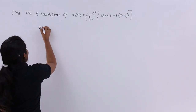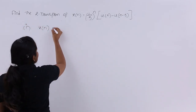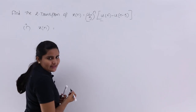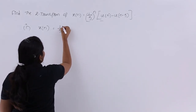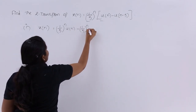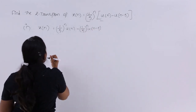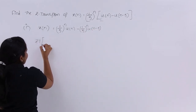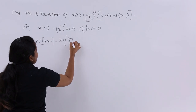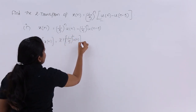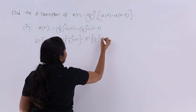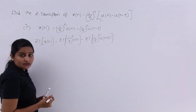In the first method, x(n) is written by separating the two terms. I am multiplying (1/5)^n inside, so that gives (1/5)^n · u(n) minus (1/5)^n · u(n-5). Taking the Z transform on both sides: Z{x(n)} = Z{(1/5)^n · u(n)} minus Z{(1/5)^n · u(n-5)}.